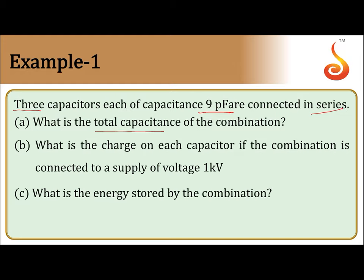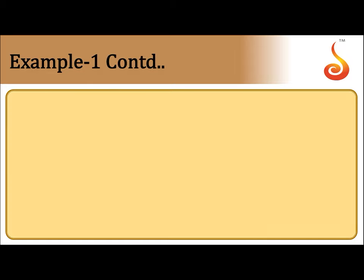First, find the capacitance of the combination, then the charge on each capacitor when connected to a one kilovolt supply, then the energy stored. Since they are connected in series, the effective capacitance Cs equals C divided by n for n identical capacitors. Here C is nine picofarad and n is three, so Cs equals three picofarad.